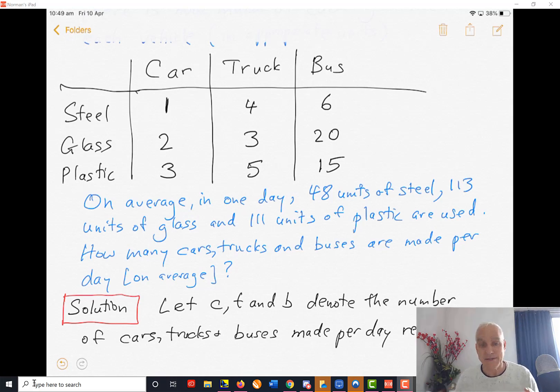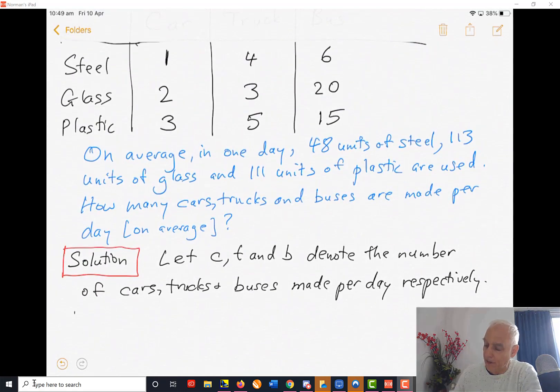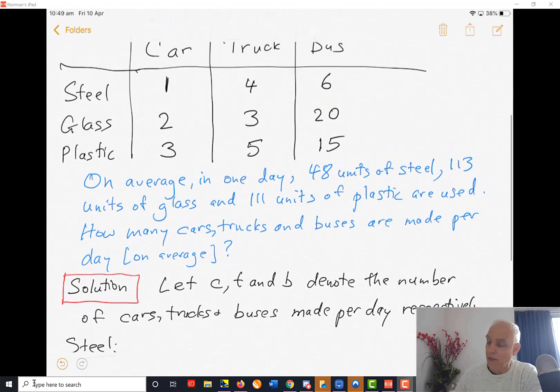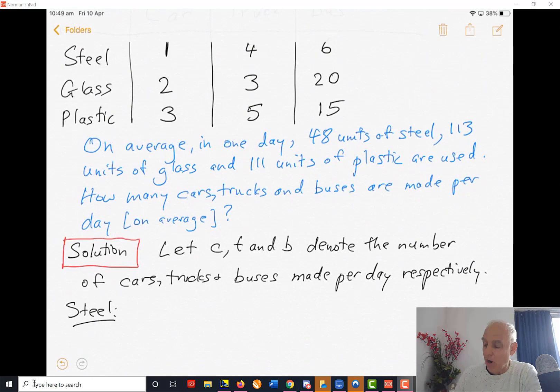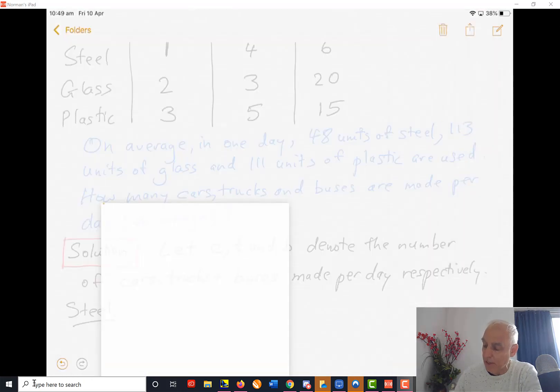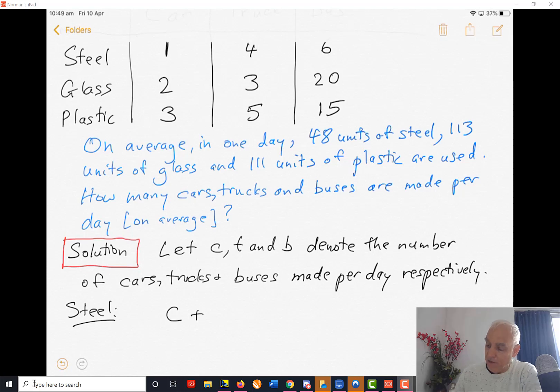The way we do this is we look at the steel equation, another equation for the glass, and another equation for the plastic. For the steel: cars require one unit, trucks four units, buses six units. So C plus 4T plus 6B equals 48, the total amount of steel used per day.